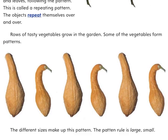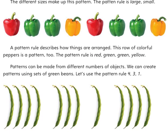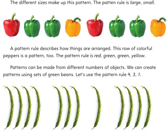Rows of tasty vegetables grow in the garden. Some of the vegetables form patterns. The different sizes make up this pattern — the pattern rule is large, small, large, small. This row of colorful peppers is a pattern too. The pattern rule is red, green, green, yellow.